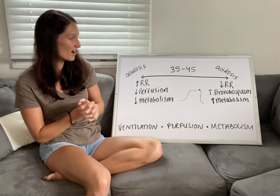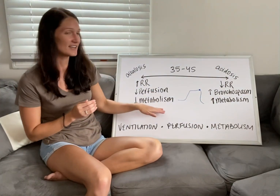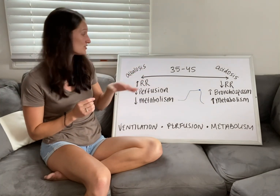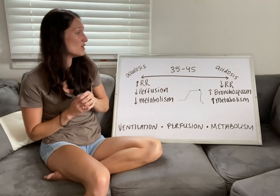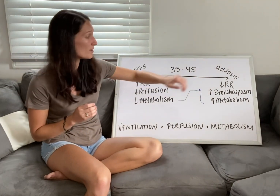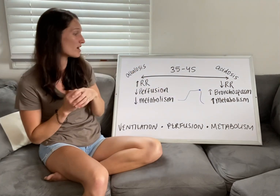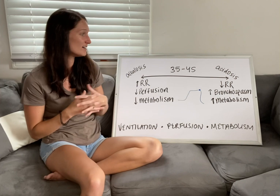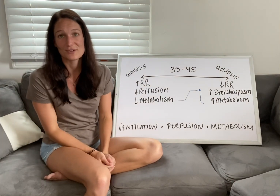It's really important to understand that all three of these things play a part. Your patient's end tidal might not just be low because they're breathing fast — it might also be low because they're poorly perfused. Or it might be high because of a low respiratory rate, or because they're retaining air in their lungs from bronchospasm. There are a lot of factors here — apply them all to each patient and make sure you're doing a thorough assessment.